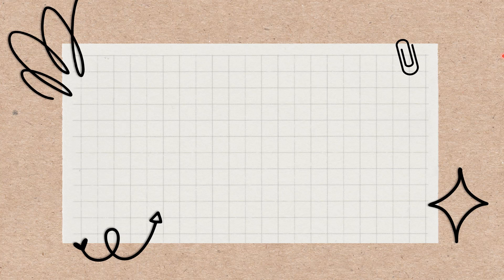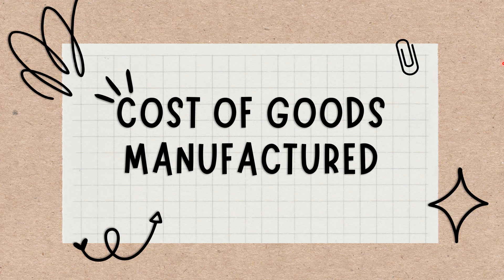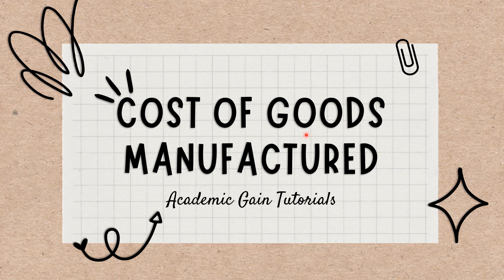The Cost of Goods Manufactured is the calculation of a company's total costs of production during a specific time period. It's also the total amount a company spends to produce goods, turn them into inventory, and put them up for sale.